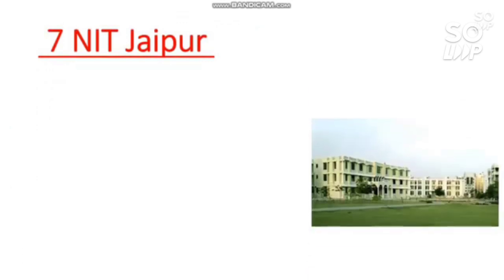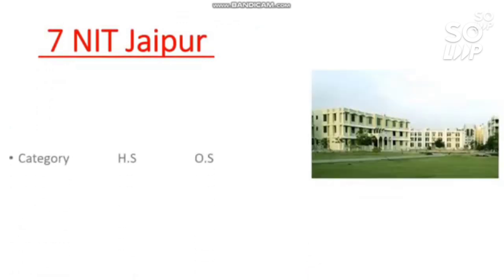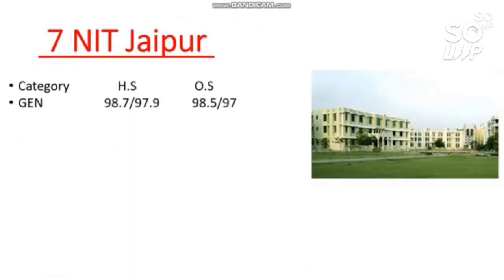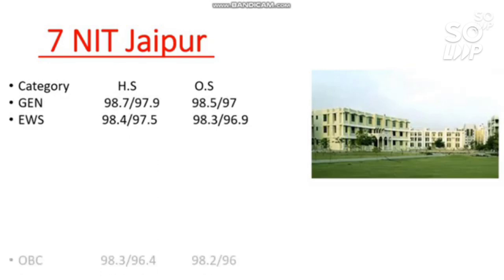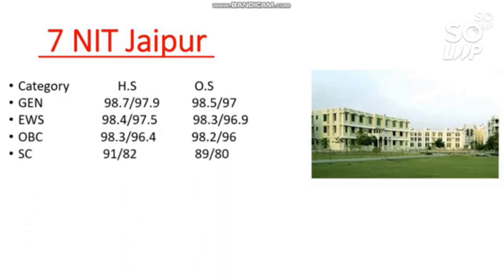Number seven is NIT Jaipur. Mechanical cutoffs: General 98.5 percentile, EWS 98.3, OBC 98.2, SC 89, and ST 90 percentile required. You can check home state cutoffs sidewise and female cutoffs after the slash — I am discussing only other state male cutoff.